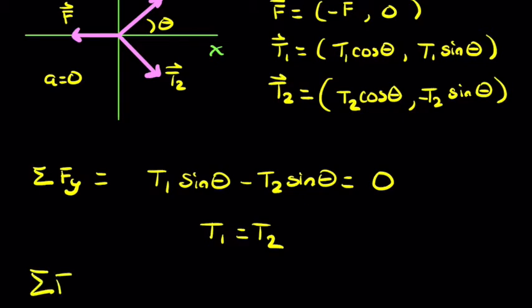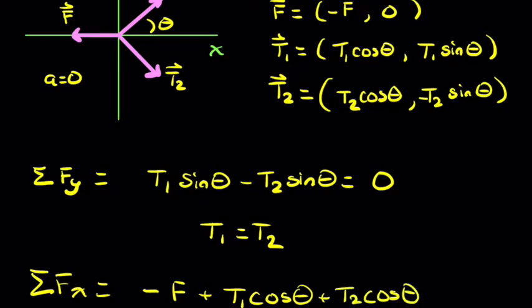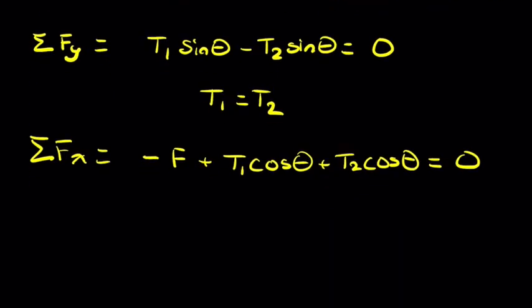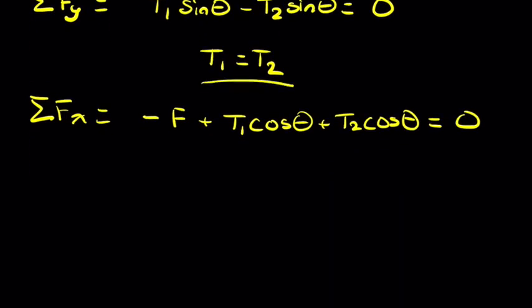So now let's sum our X components, which would be negative F plus tension 1 cos theta plus tension 2 cos theta, which also equals zero. Now in this case, because T1 equals T2, we could simply just state this in terms of negative the pulling force plus, we'll just call these T now because they're both the exact same magnitude. So it'll be 2T cos theta, and that equals zero.